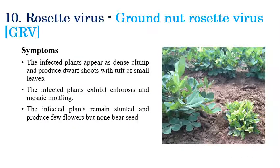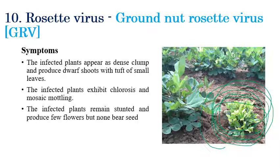Rosette virus is caused by Groundnut Rosette Virus. Symptoms include stunting of plants with dense clumps and dwarf shoots, and tufts of small leaves. Plants exhibit a bushy appearance with yellow chlorotic leaves, remaining stunted, producing very few flowers, and sometimes bearing no pods.